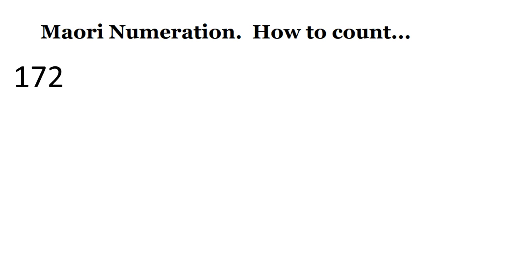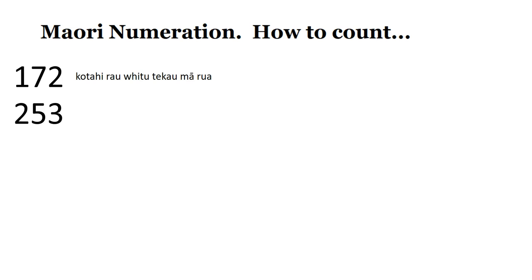Let's try and extend it a little bit by having numbers such as 152 or 321 — in other words, digits from 0 to 9 in each of the place values: the hundreds column, the tens column, and the ones column. So, for example, kotahi rau, fitu te kau mā rua — that's 172.